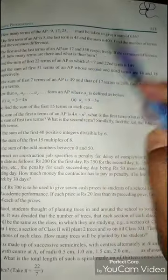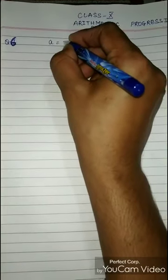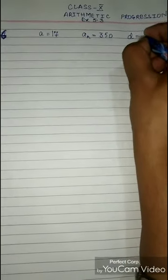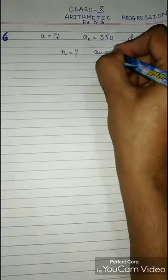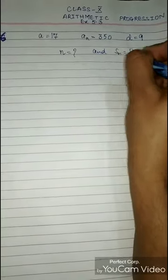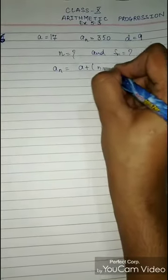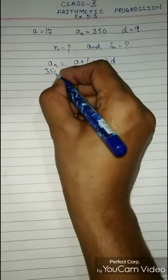Let us write what is given: a = 17, an = 350, and d = 9. We have to find n and Sn. Starting with the formula for number of terms: an = a + (n−1)d. So 350 = 17 + (n−1)×9.